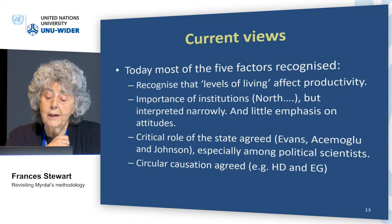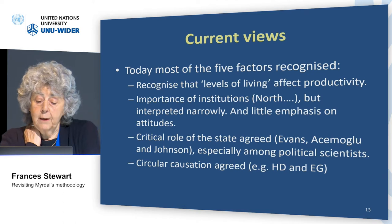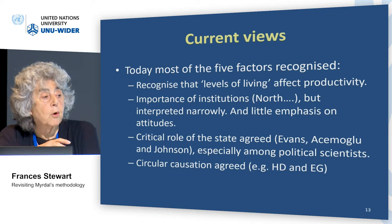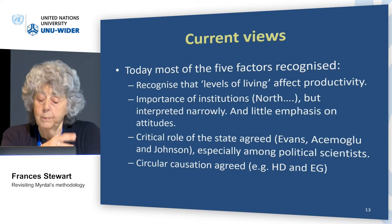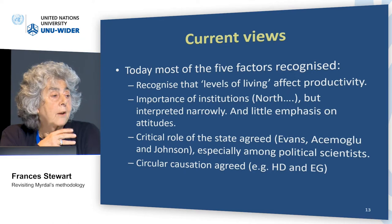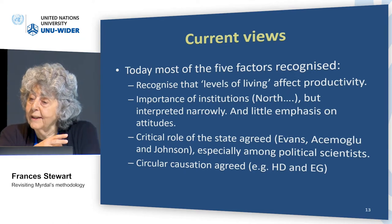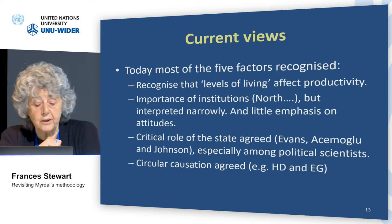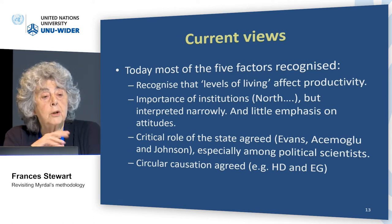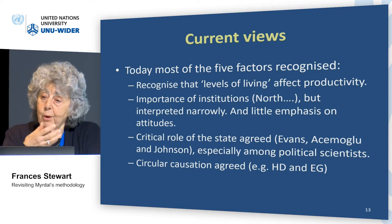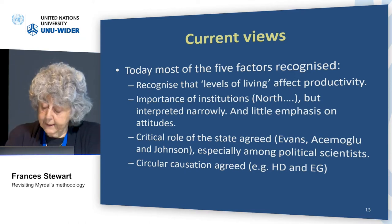So what about current views about the five factors? I think we generally recognize that levels of living affect productivity. The importance of institutions is, of course, absolutely central to analysis, maybe not interpreted quite as broadly as he did, but central. It's totally agreed that the state is critical — he had this concept of soft state and hard state, and only hard states could really get policy change, and many people have worked on that. And I think we generally agree about circular causation — if you go forward on one front, you need to go forward on several fronts simultaneously to be successful.